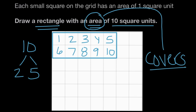And we could have drawn this rectangle anywhere on the grid. It doesn't matter. We could have drawn it down here with two rows of five, or right here with two rows of five. Any rectangle covering two rows of five has an area of 10 unit squares.